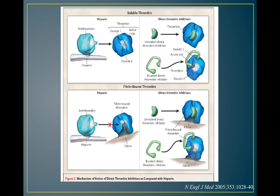This slide covers the difference between heparin and direct thrombin inhibitors. Normally, antithrombin deactivation of the clotting cascade is slow, but heparin binds to antithrombin and induces a conformational change that accelerates this process significantly. Direct thrombin inhibitors work differently — they can be bivalent or univalent and bind directly to the active site of thrombin.